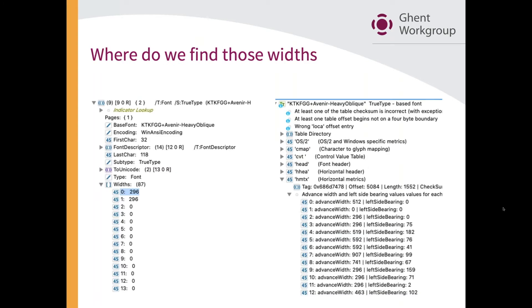On the left-hand side you see the metadata associated with the font; on the right-hand side you see an embedded TrueType font. In a PDF file, both are present. You always have metadata for the font, and you might have an embedded font. But if you have a PDF/X file, for example, you have to have an embedded font — it always has to be there. The problem is that both the metadata in the PDF and the font itself contain width information, so it's not in just one place — it is in two different places.